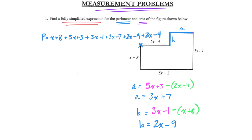There is me traveling around that entire shape. I've got all my sides now — a big, long, ugly expression. Now I need to make sure I fully simplify it by collecting like terms. I've got x + 5x = 6x, + 3x = 9x, + 3x = 12x, + 2x = 14x, + 2x = 16x total. Then my constants: 8 + 3 = 11, −1 = 10, +7 = 17, −9 = 8, −4 = 4. So my perimeter is 16x + 4. Hopefully we match up — we're good.